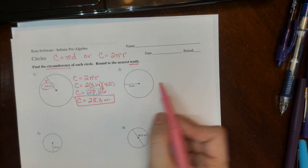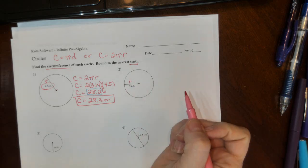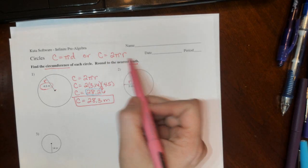Number 2: 5 centimeters. Again, this is our radius, so we're using 2πr. Circumference equals 2 times pi times radius.